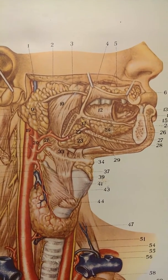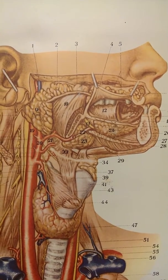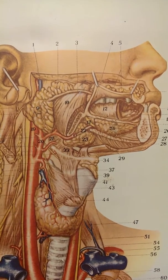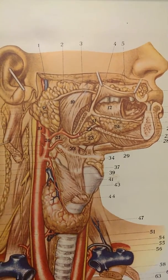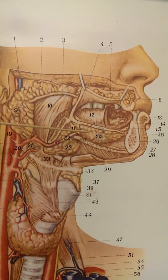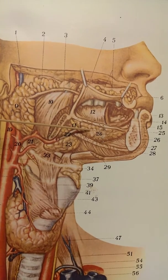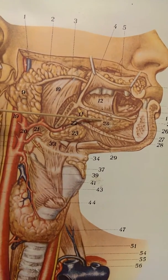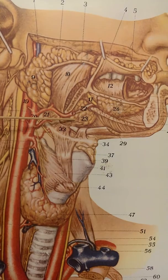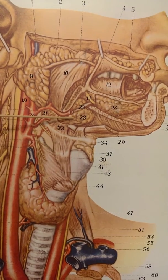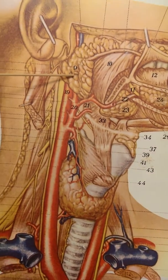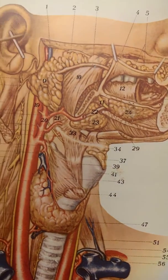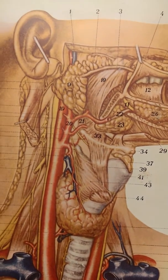In this recording, we're going to take a look at our digestive system chart and some of the digestive structures. Starting up in the oral region, we can see some of the salivary glands. Under the tongue, the sublingual gland; under the mandible, the submandibular gland; and right in front of the ear, the parotid gland with the parotid duct leading away from it.